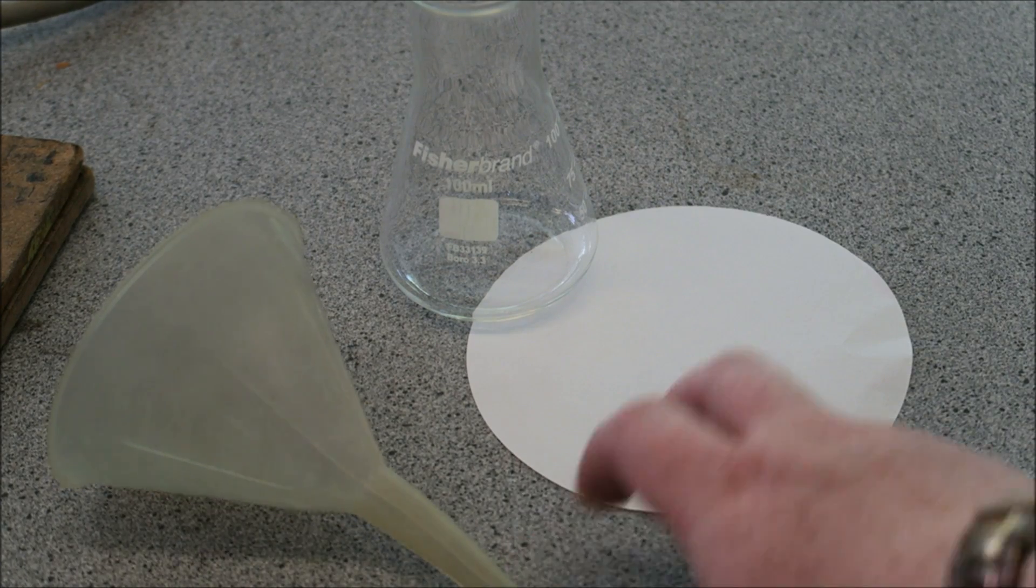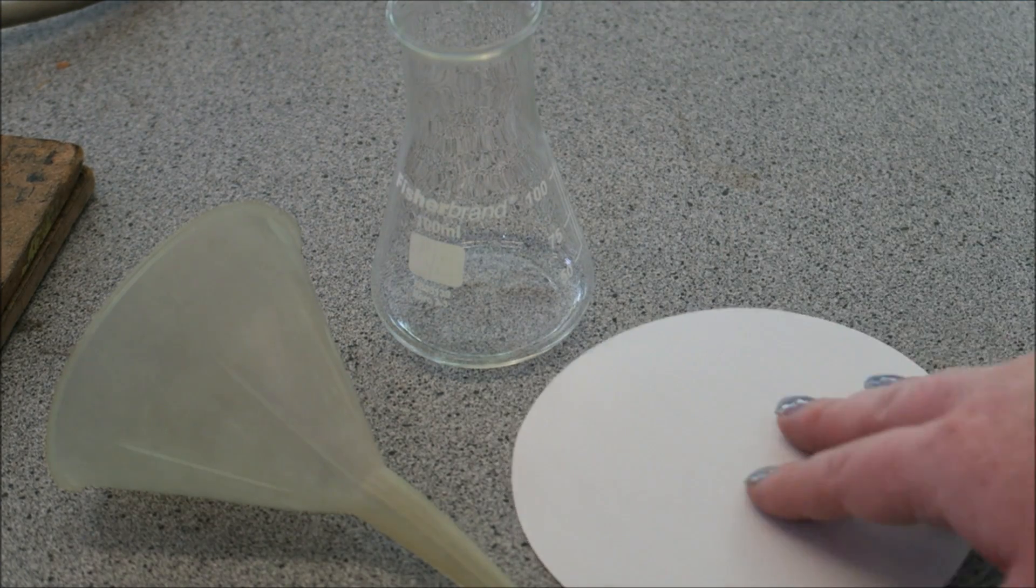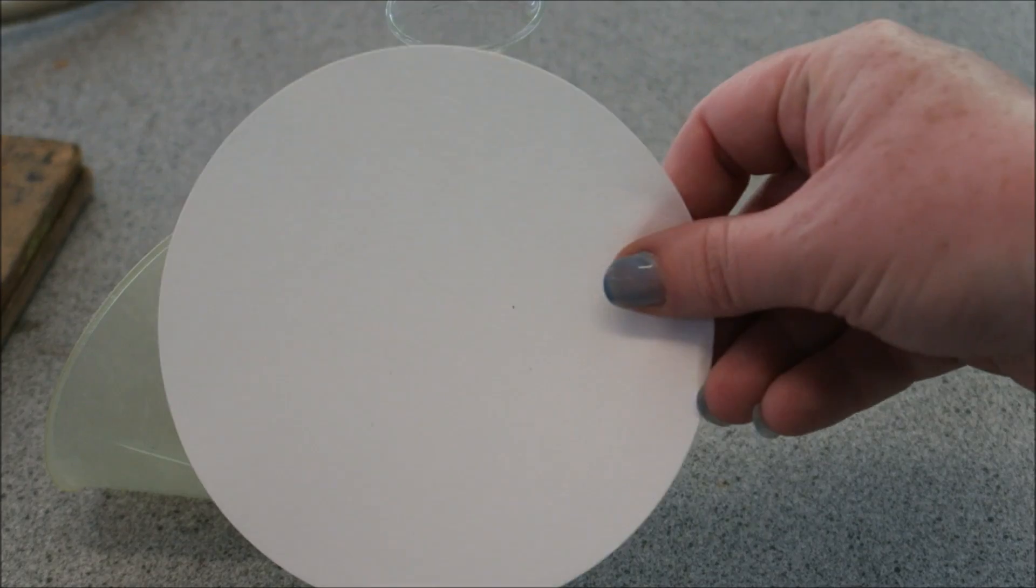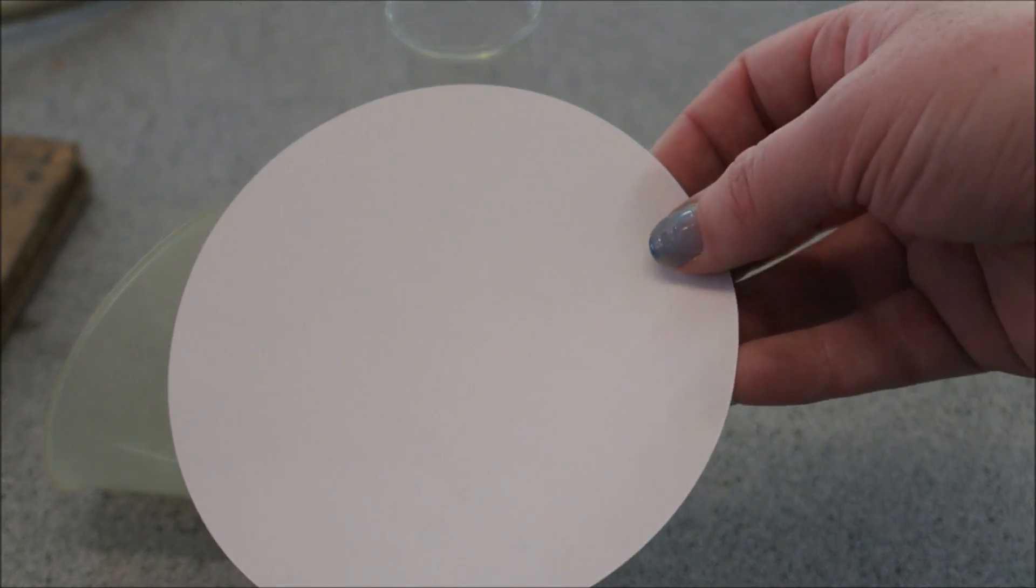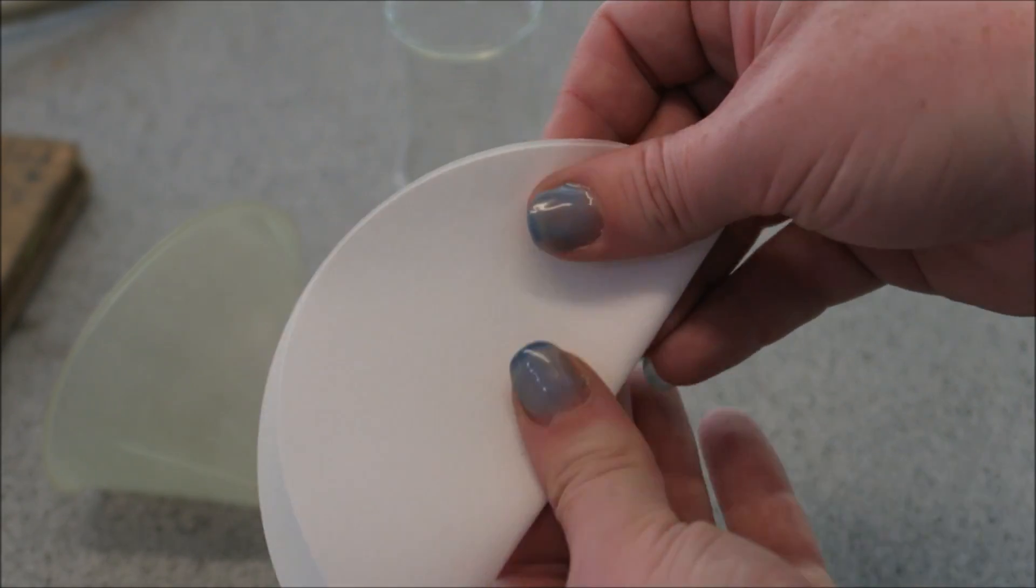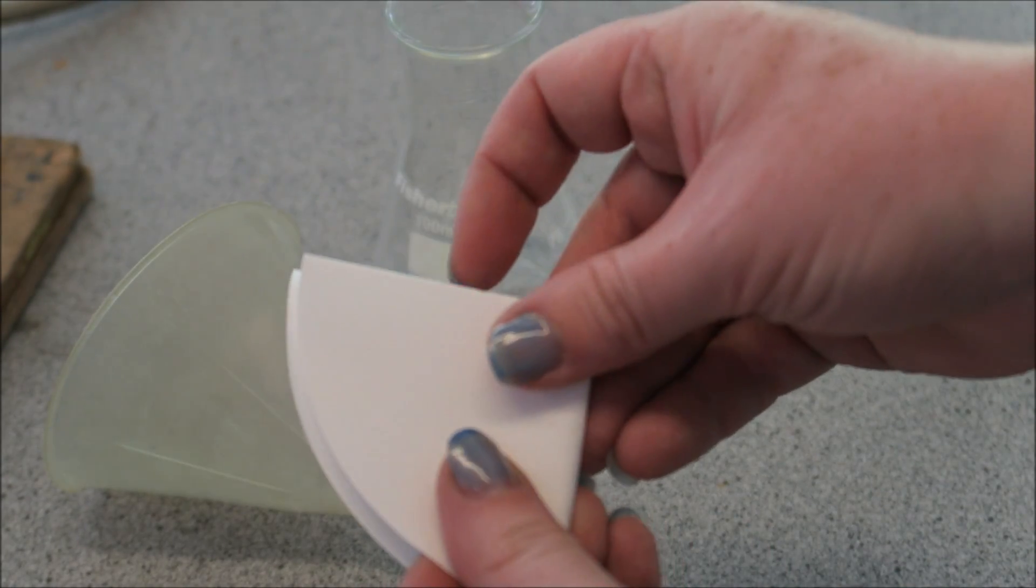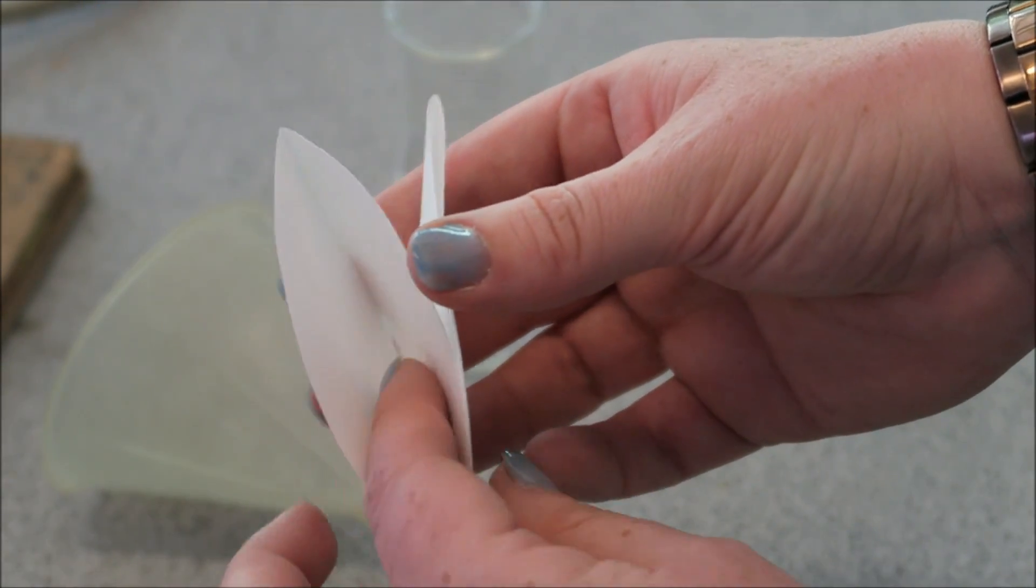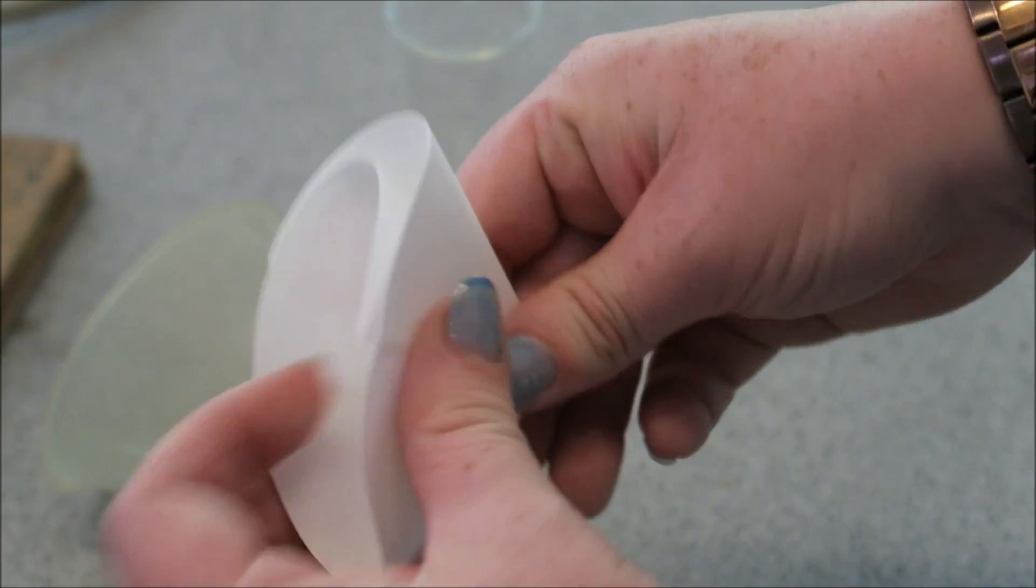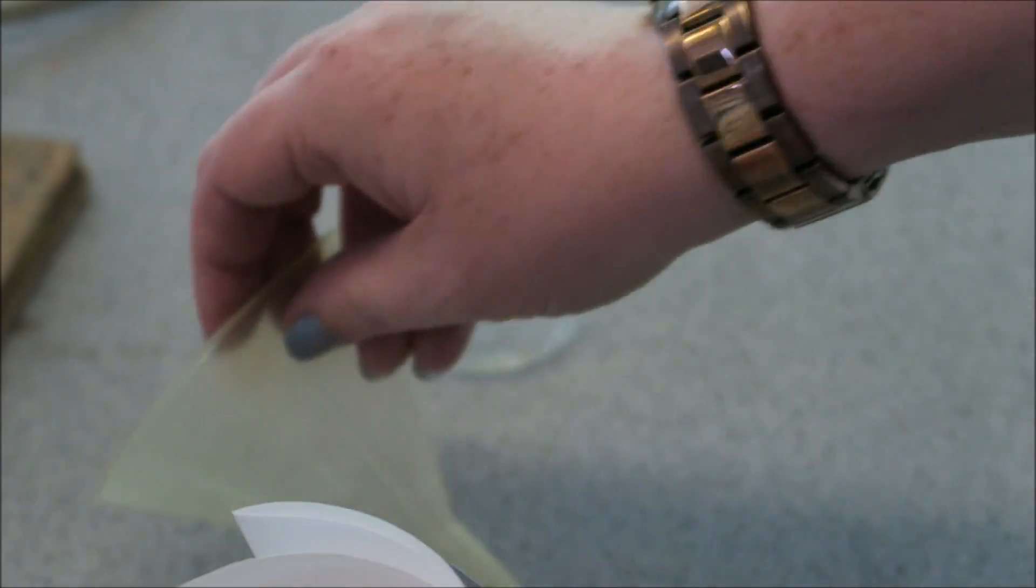Then we need to filter the mixture, so I've got my funnel, I've got my filter paper and my conical flask and we need to fold the filter paper so that everything will go through. Now there are two different ways you can fold filter paper. You can fold it in half and in half again and then just take one of the separations and then just give that a bit of a squidge, technical term.